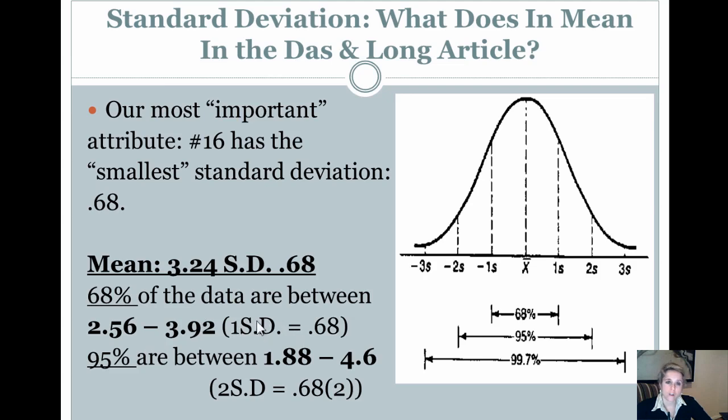If we want even more confidence in understanding where most of our data are, if we look to the 95% bar, that's two standard deviations below and above. So 0.68 times 2 is what? 1.36. So 3.24 minus 1.36 or plus 1.36, which gives you 1.88 to 4.6, 0.68 being two standard deviations, times two standard deviations.